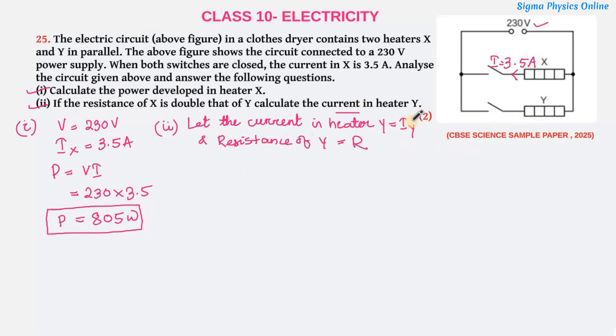Let the current flowing in heater Y be IY, and let R be the resistance of this heater. From Ohm's law, IY will be V by R. Let's write similarly for heater X. Let the current flowing in heater X be IX, which is 3.5A as given. It's given that the resistance of X is double that of Y.